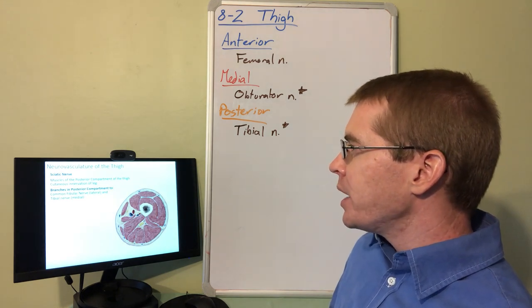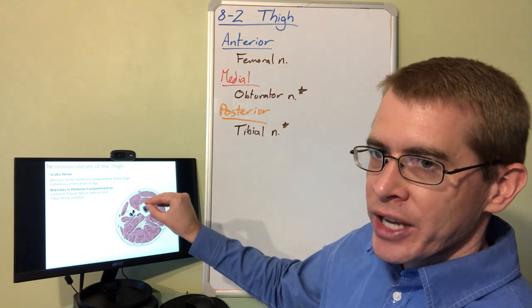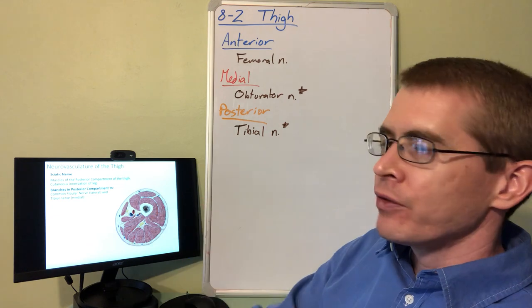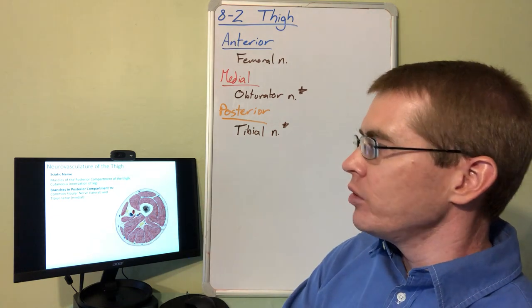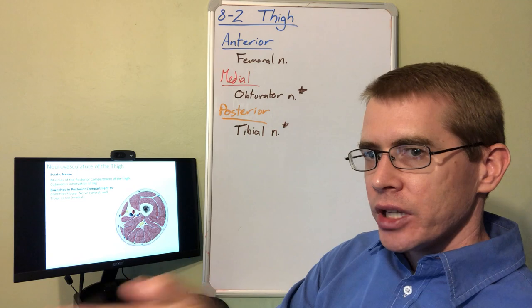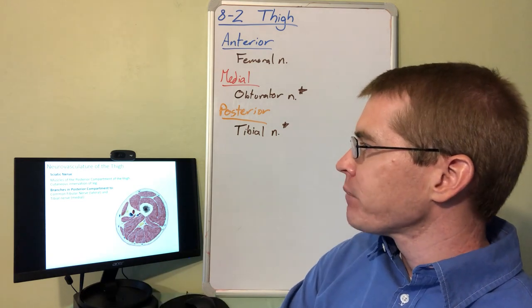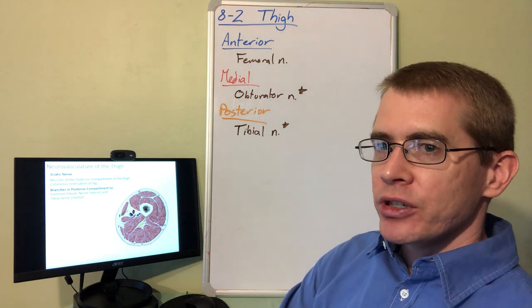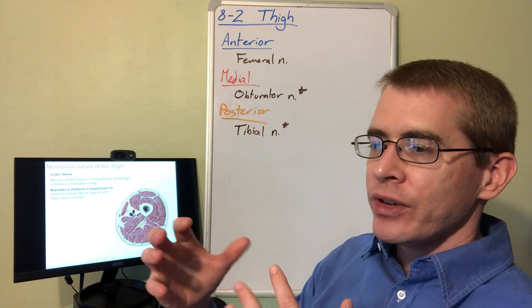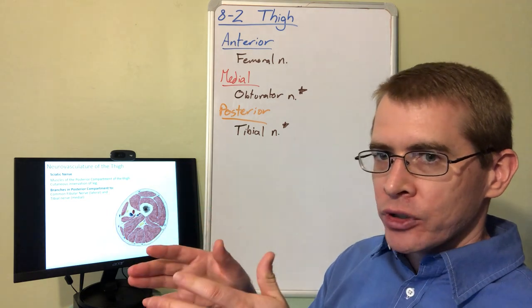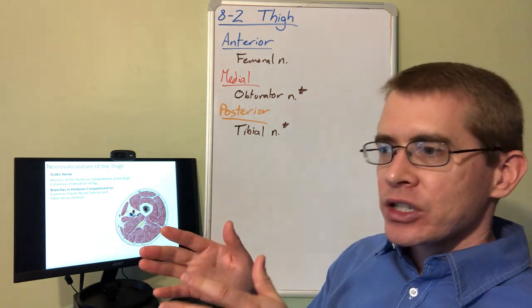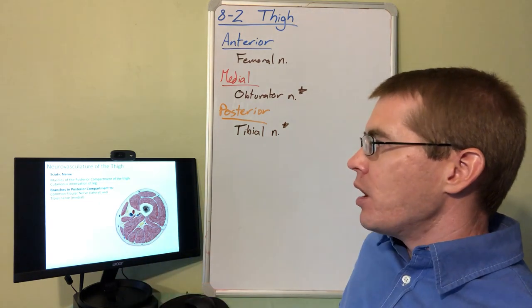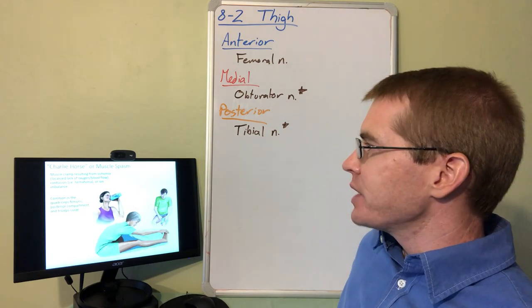I already mentioned the sciatic nerve branching into the tibial nerve and the common fibular nerve. The tibial nerve is the more medial branch in the posterior compartment of the thigh, and the common fibular nerve is the more lateral branch in the posterior compartment of the thigh. This will become relevant as we get into how these nerves travel through the popliteal fossa and supply the leg and into the foot. Just be aware that this process is happening.